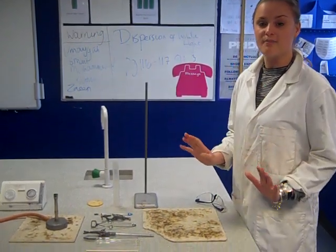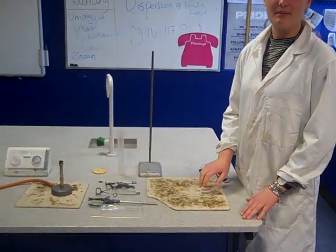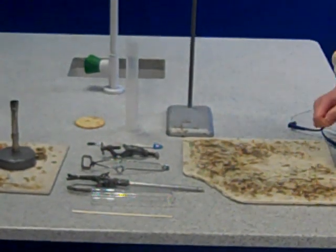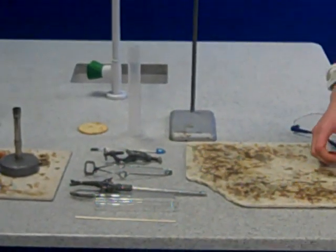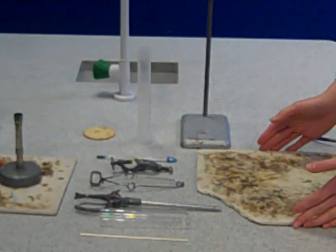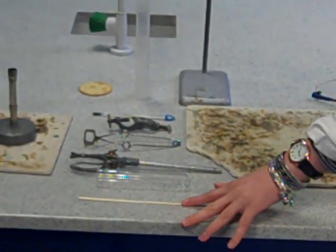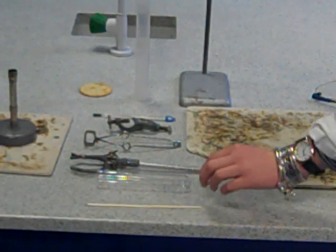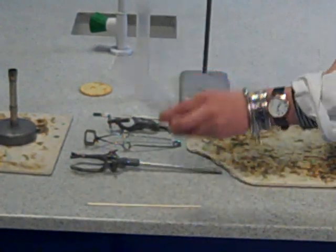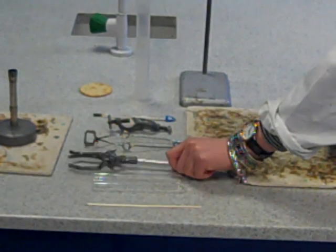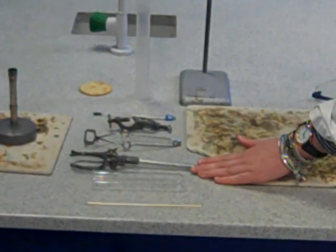I'm going to start off by showing you the equipment that we need to actually conduct this experiment. So firstly, you should have seen on your list the equipment that you've been asked to collect. It should look like what I have got in front of me. So I have a splint. This is used to light the Bunsen burner. I have a boiling tube. This is what I'm going to put the water in. This is called a clamp. I'll show you how to set those up in a second.